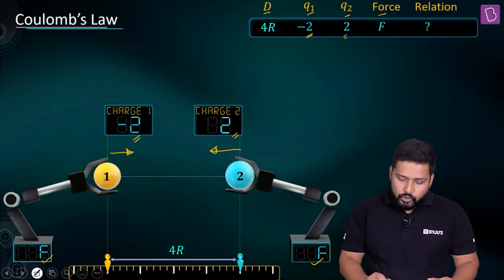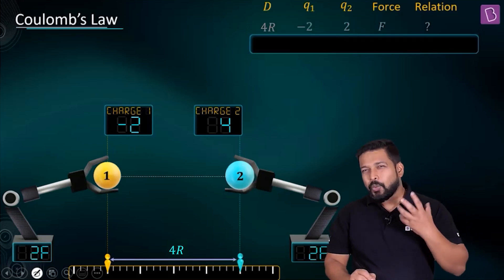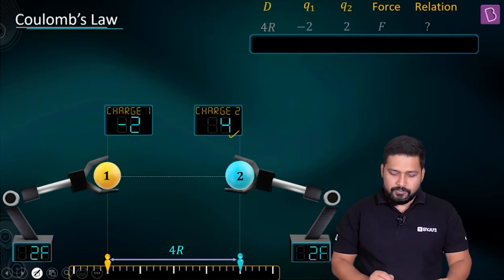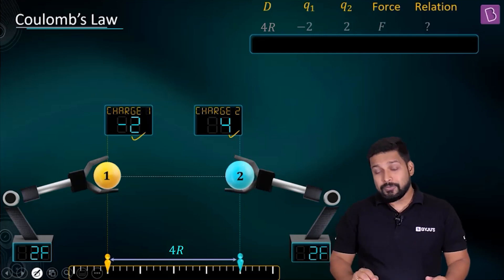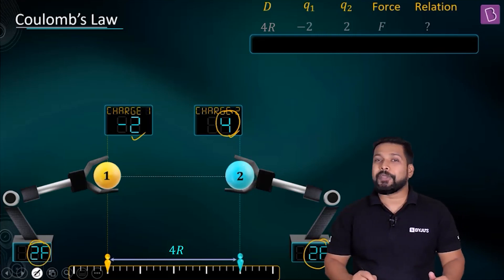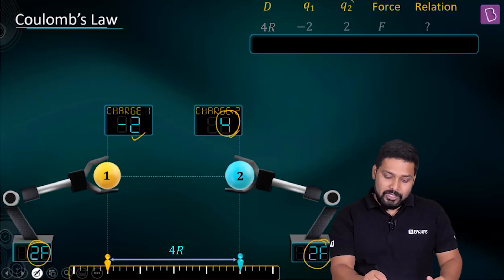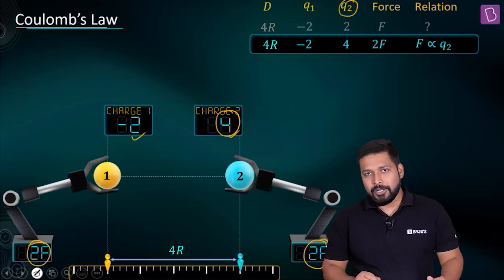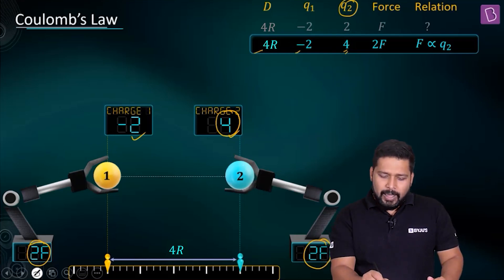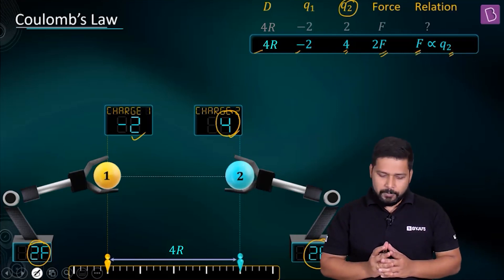To find the relation, we keep all other quantities fixed and change just one. If we change Q2 and make it double — from −2 to −4 — while everything else stays the same, the force also becomes two times. This tells us there is a direct proportionality between force and Q2: F is directly proportional to Q2.